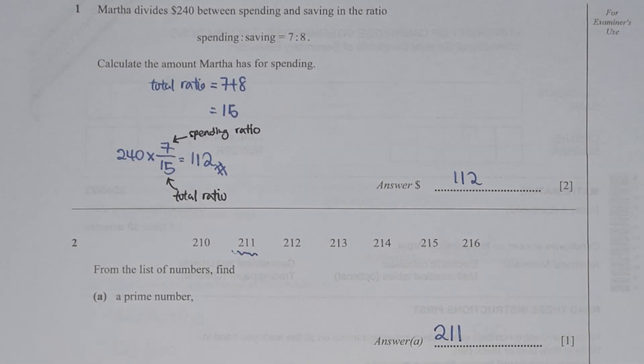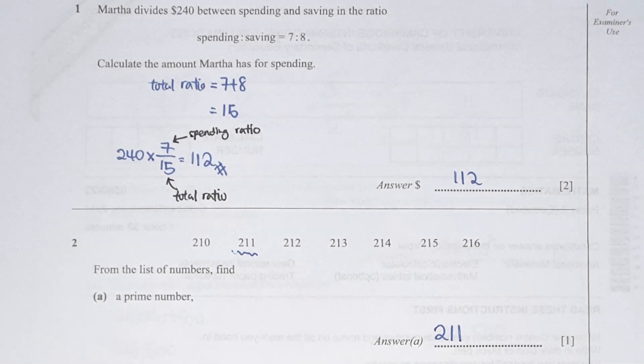For question 1, I identified the total ratio by taking 7 plus 8 which results in 15. So 240 times 7 over 15 gives the result as 112.